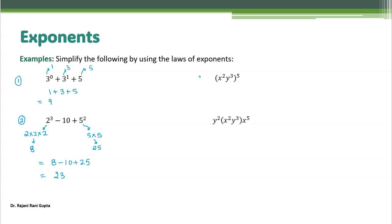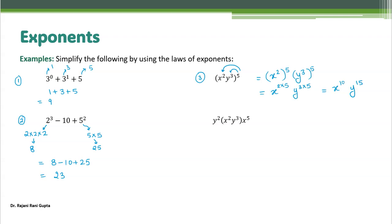Third example: you have a product of two terms raised to a power 5. This 5 goes to both x and y. So you get x power 2 times power 5, and y power 3 times power 5. That gives x power 10 and y power 15.